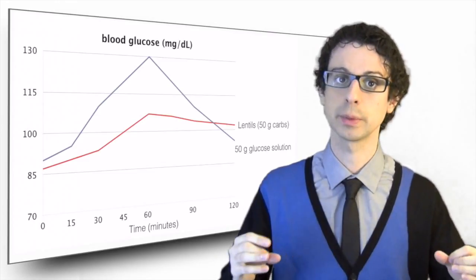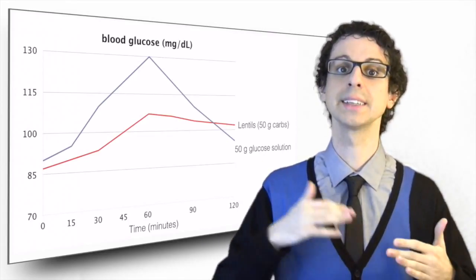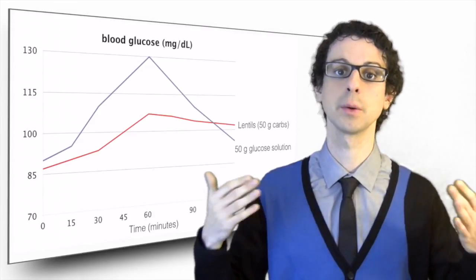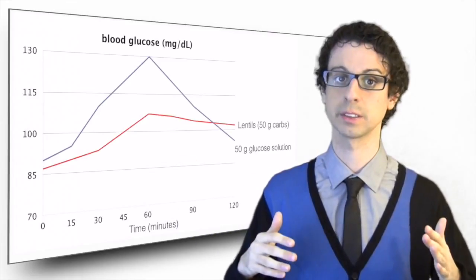Now you do the same measurement and in this example you see that the peak is about at the same time, but it's much lower and it doesn't decline as fast. Of course, different people will respond in different ways, but this doesn't matter because you can use the first measurement to standardize the result.